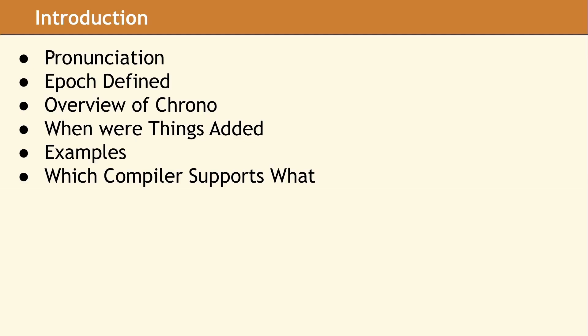In older versions of C++, the only support for date and time processing were the functions inherited from C. The C++ standard changed all of this. New classes were added to provide built-in date and time data types. It has taken several subsequent releases to provide full support when C++20 added calendars and time zones. We are going to show when the various date and time functions and classes were added and in what version of C++. A few examples will be presented to introduce the basic functionality.